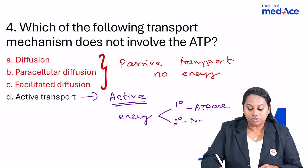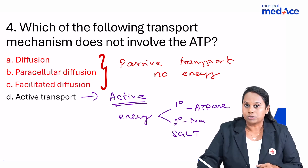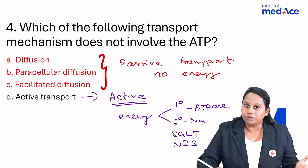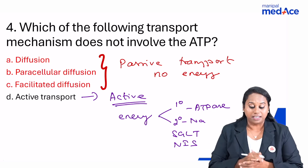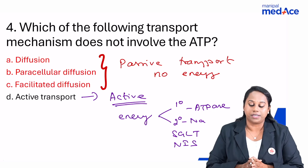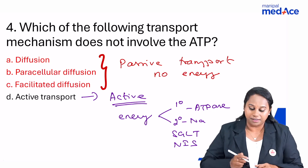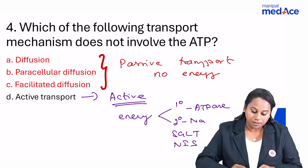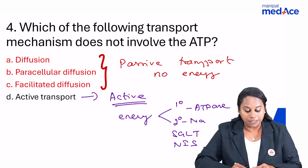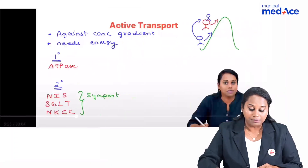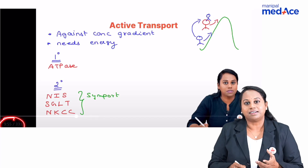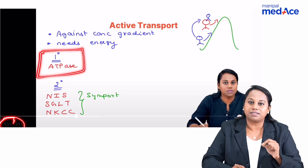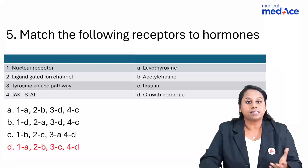Secondary active transport uses energy from sodium co-transporters like SGLT (sodium-glucose co-transporter) or NIS (sodium-iodide symporter) — any transport where a substance is transported along with sodium. ATP is specifically broken down in primary active transport. So if the question asks which does not involve ATP, the answer would be options A, B, and C. If it asks which involves ATP, go for active transport.